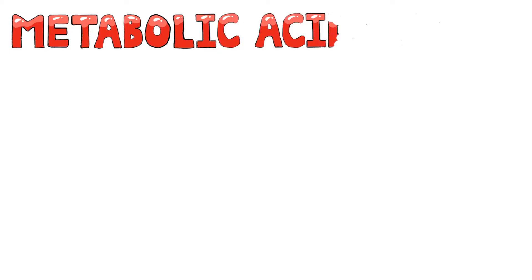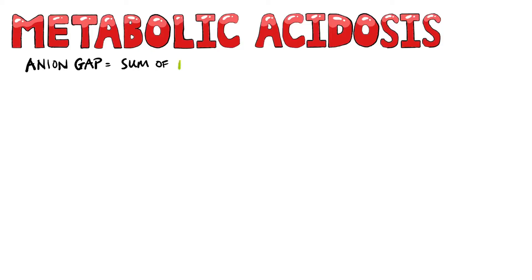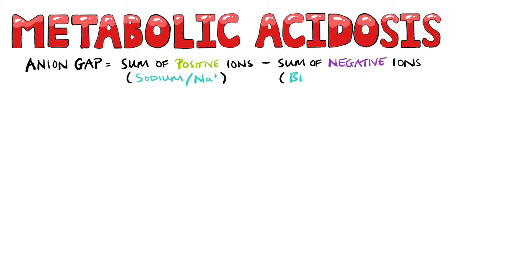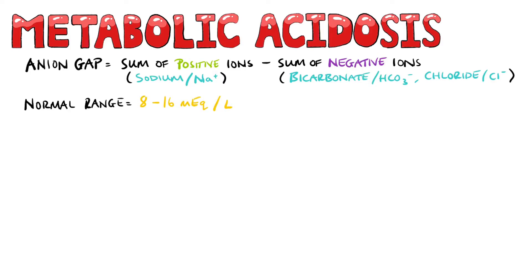MUDPILES is a mnemonic used to remember the causes of a high anion gap metabolic acidosis. The serum anion gap is the difference between the sum of the positive and negatively charged ions in the serum. Mostly, this is the concentration of sodium, minus the concentration of chloride and bicarbonate. Potassium is also sometimes considered, but oftentimes the only positive ion considered is sodium. A normal anion gap is between 8 and 16 mEq per litre when potassium is not considered, but this is really variable between labs.